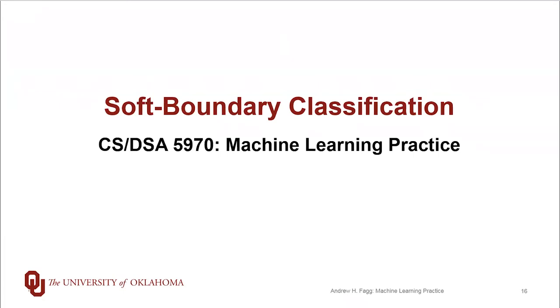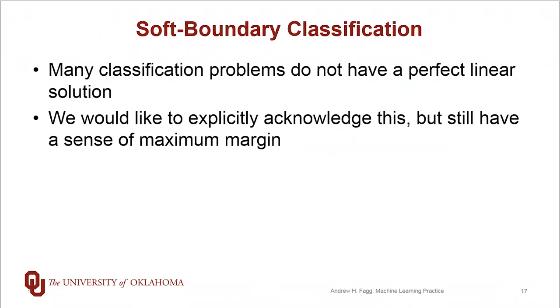In the soft boundary classification approach, we actually start to relax this constraint. In particular, there are lots of different problems out there where we don't have a perfect linear solution that allows us to have a boundary that separates the positive examples from the negative examples.